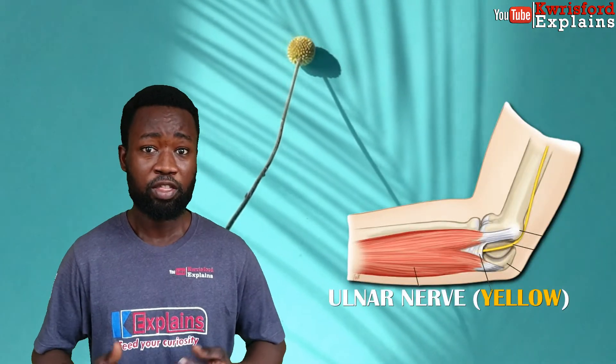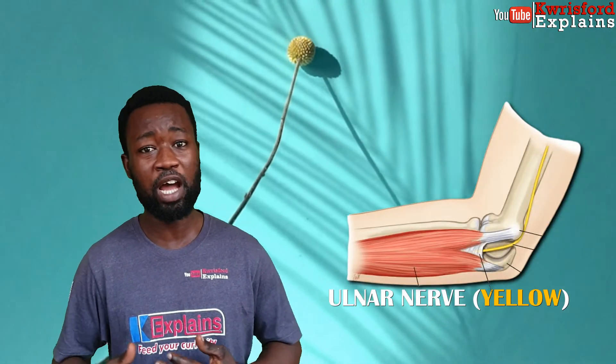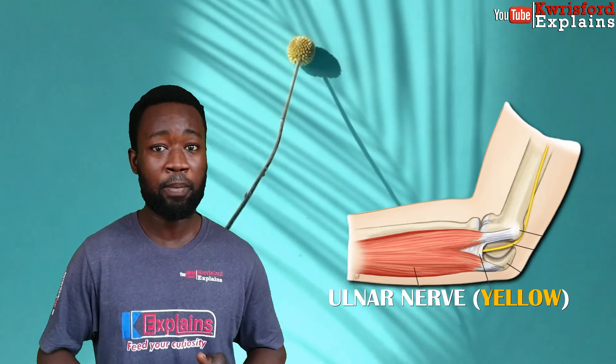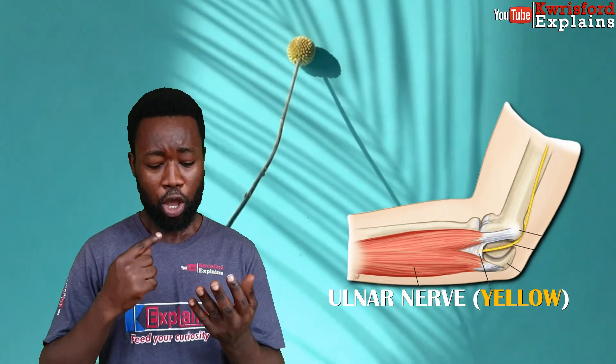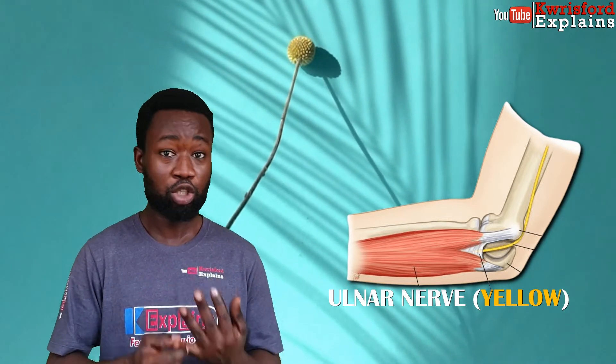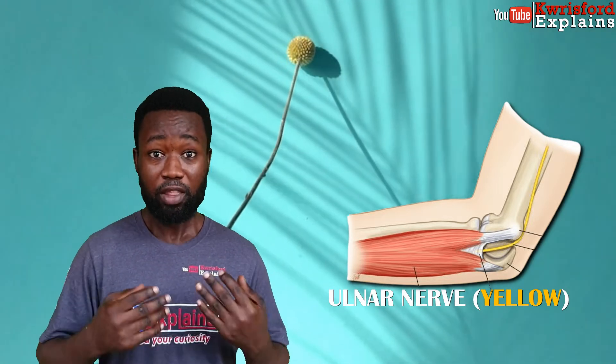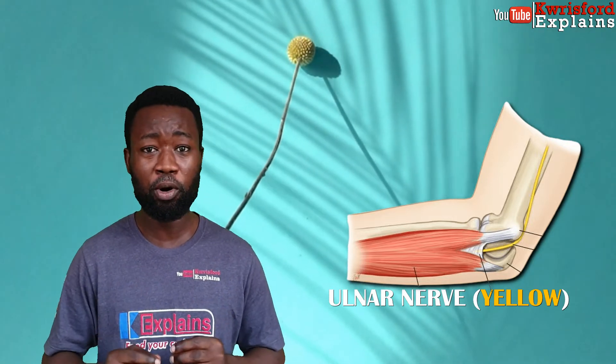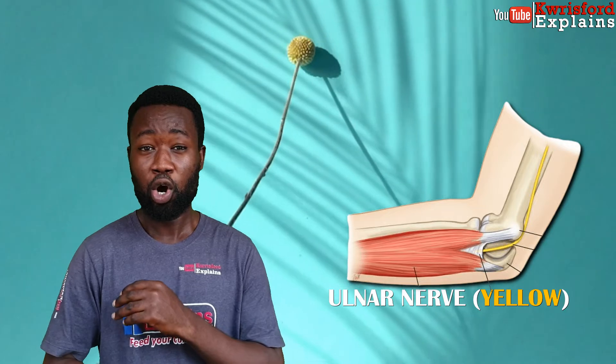There is this nerve known as the ulnar nerve. This nerve starts off from the region around your neck and ends up around your ring finger and your little finger or your pinky finger. This nerve is slightly vulnerable around your elbow.